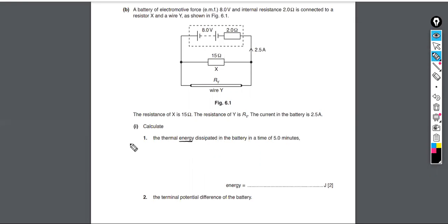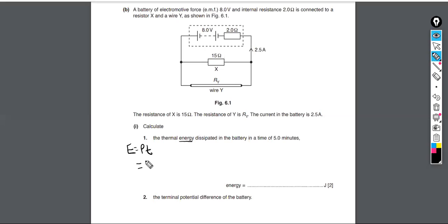Energy is equal to power times time, because power is the rate at which energy is converted from one form to another. Since we're given the time, we need to figure out how to calculate power. One equation for power is current times voltage — but the voltage here has to be the lost volts.